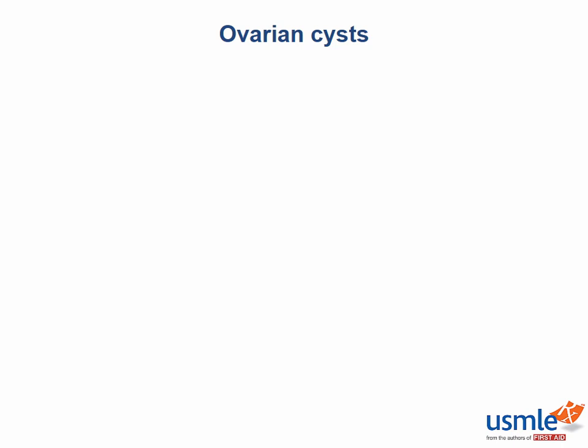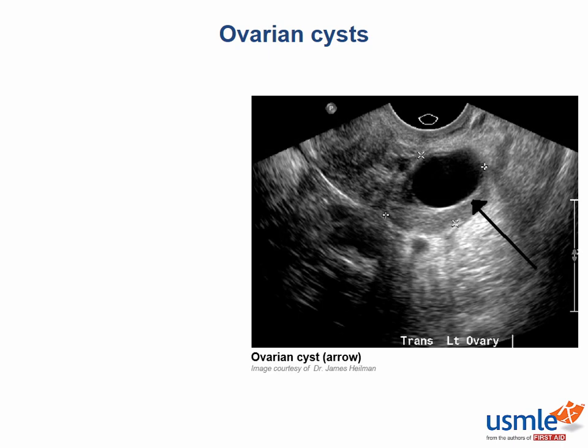Staying on the subject of the ovaries, this fact summarizes the different types of ovarian cysts. Most of these cysts are harmless, but they can cause problems when they rupture or bleed, so occasionally these cysts do have to be surgically removed. As you can see from this ultrasound, cysts are usually circular hypoechoic lesions.